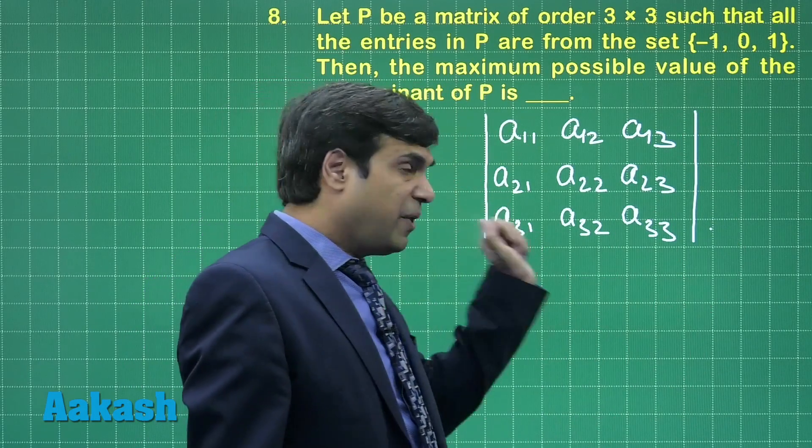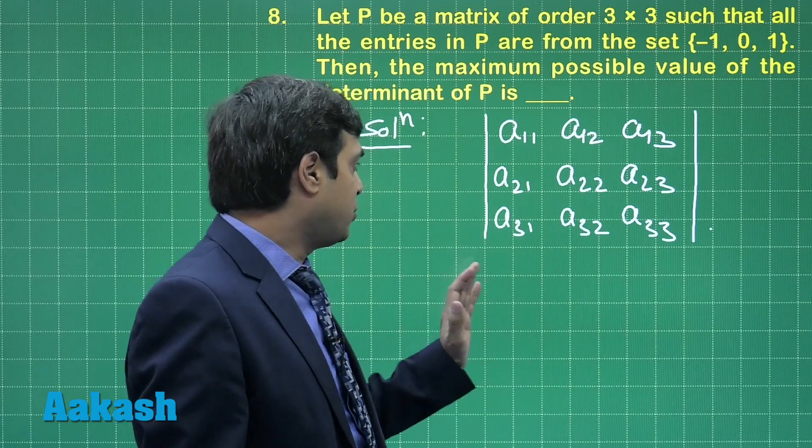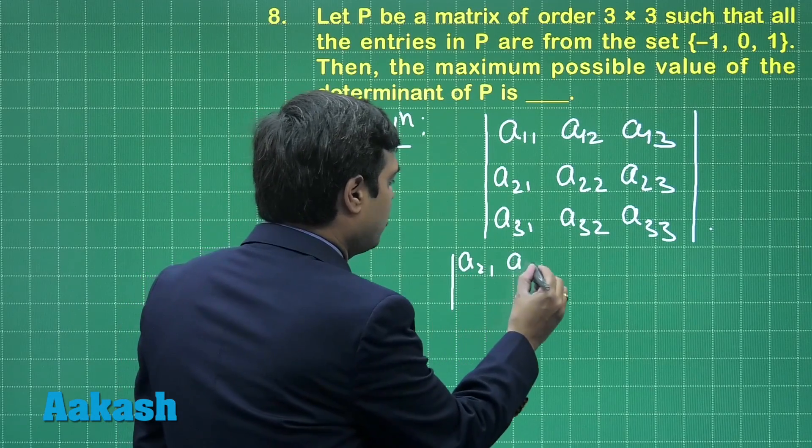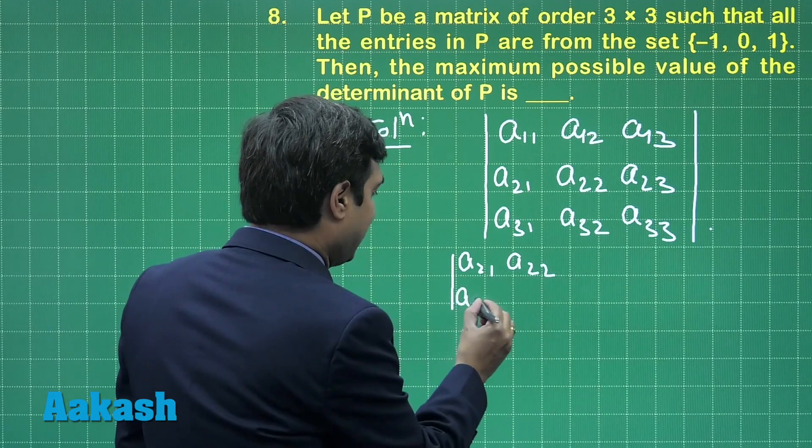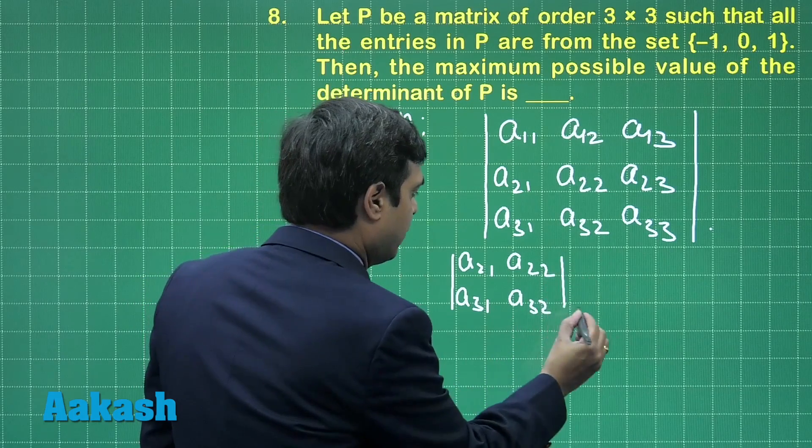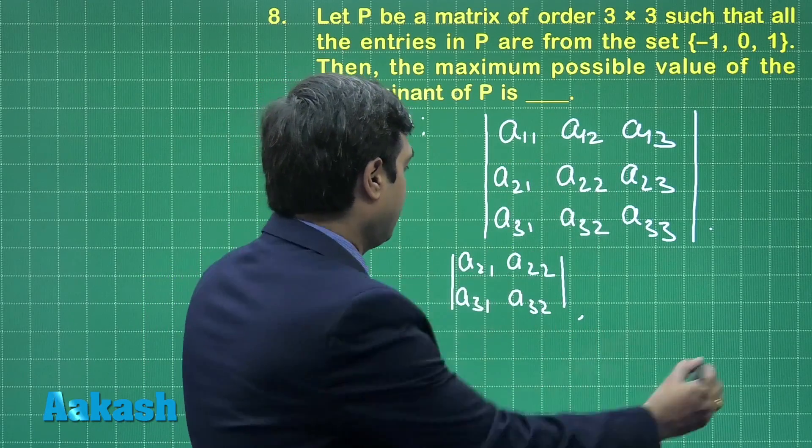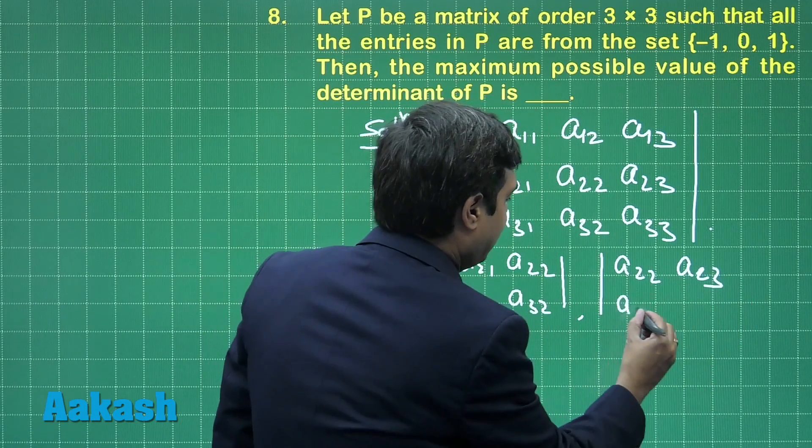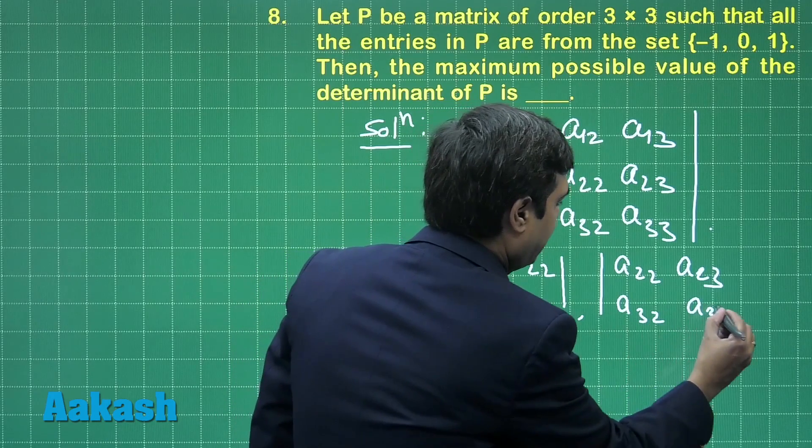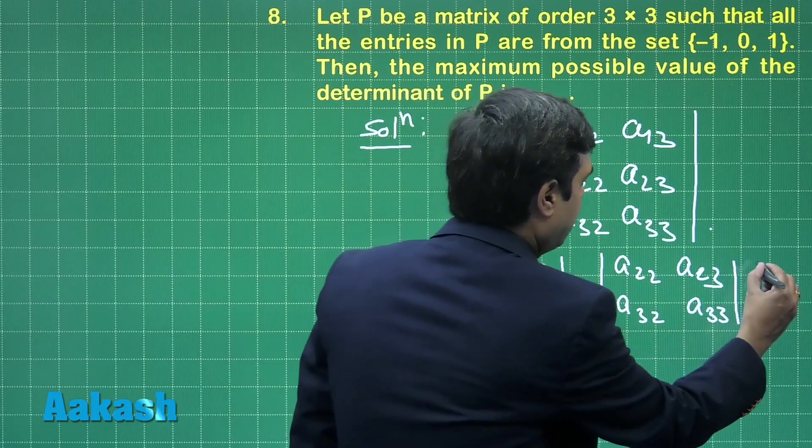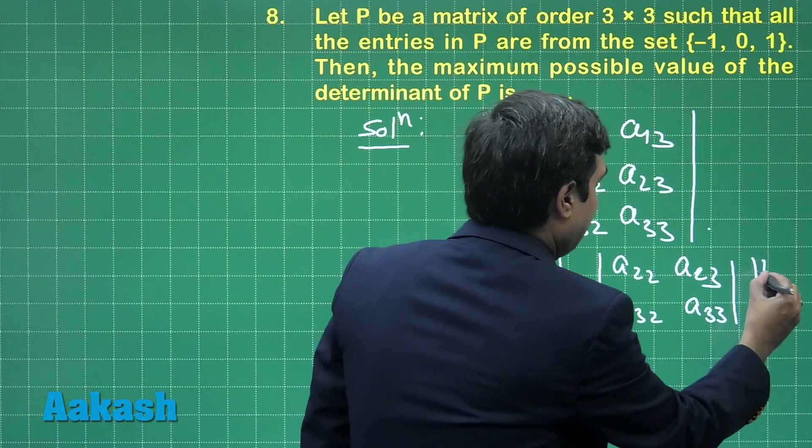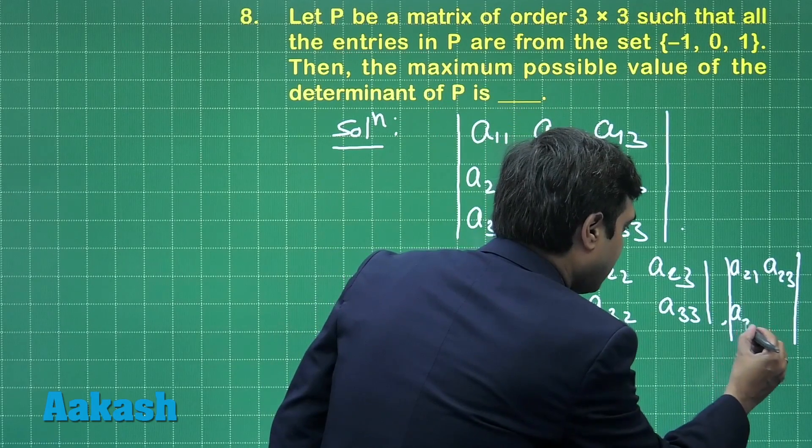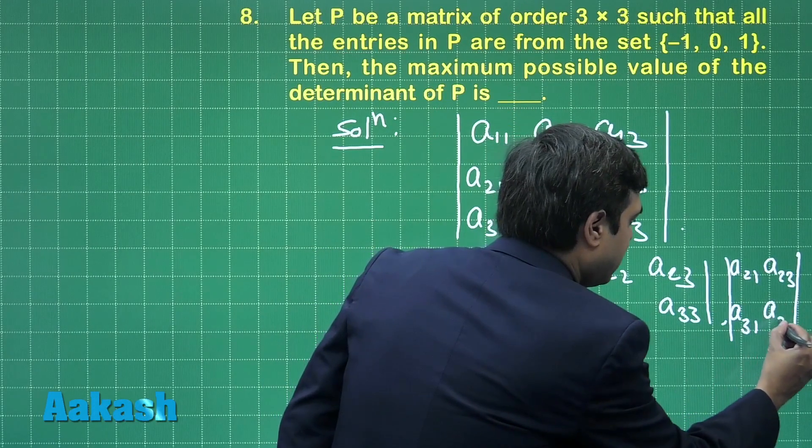Now, determinant of submatrix of order 2, when you take, you find the possibilities like a21, a22, a31, a32, or a22, a23, a32, a33, third one a21, a23, a31, a33.